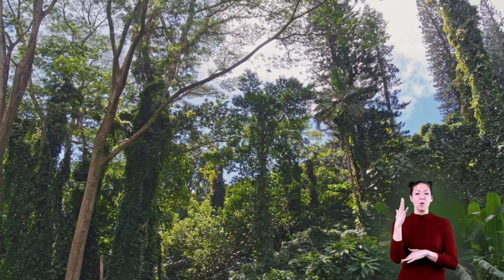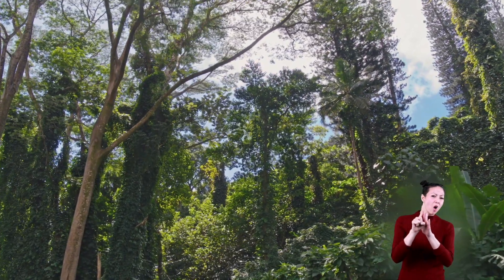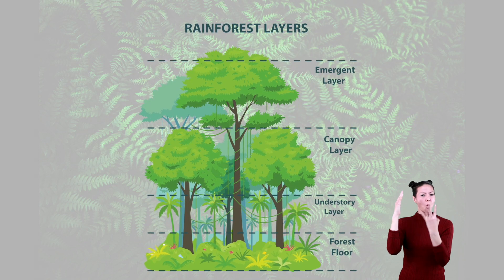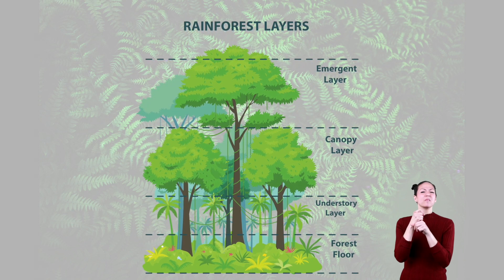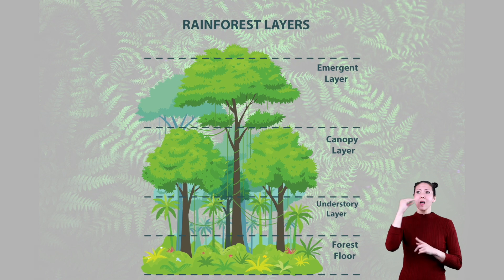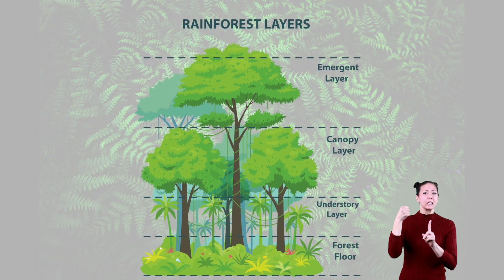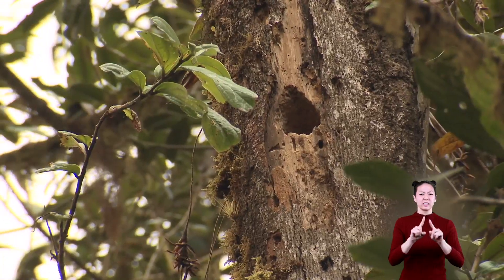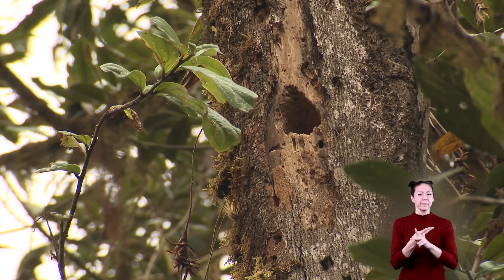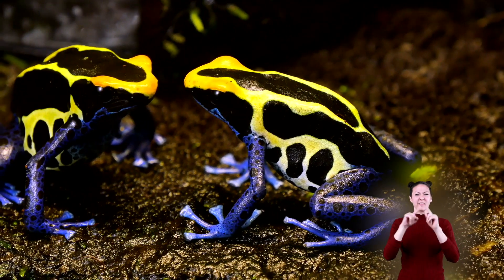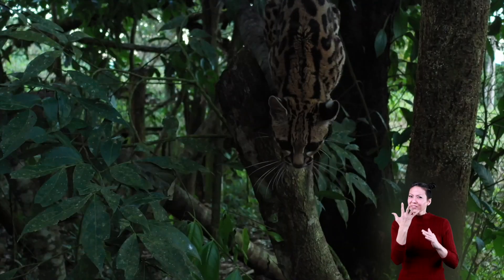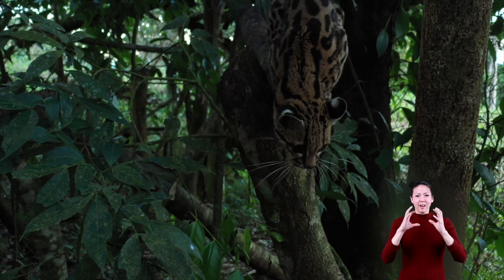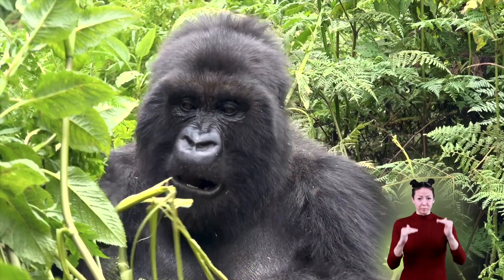Because rainforests are so tall and dense, they are divided into four layers. Each layer receives a varying amount of sunlight and rainfall, and different types of plants and animals are found on each layer. Let's talk about each one.